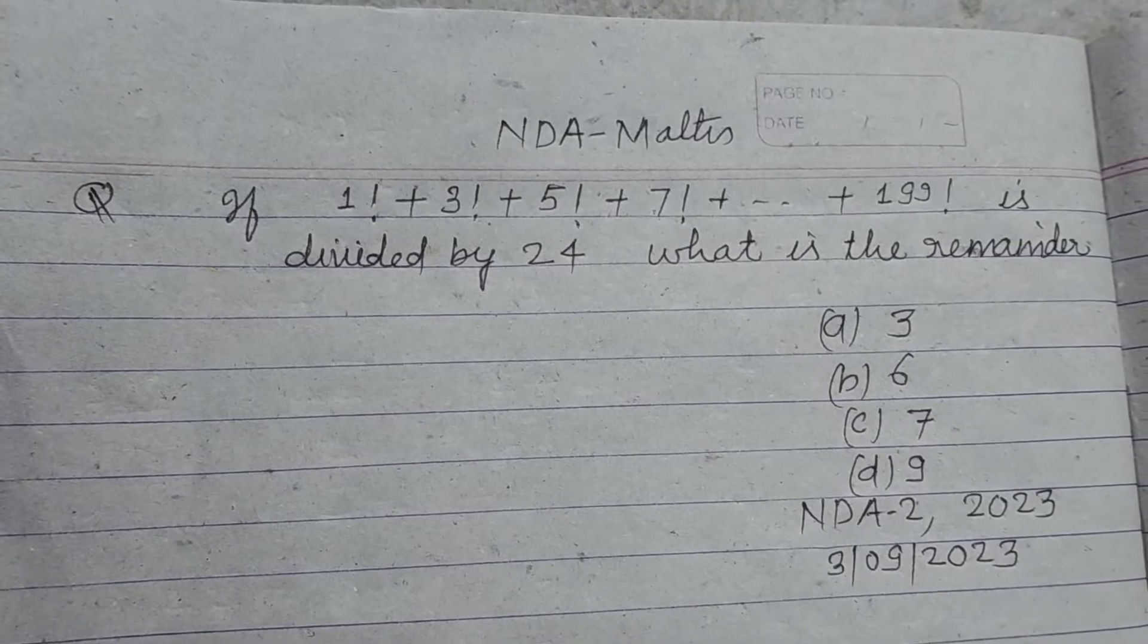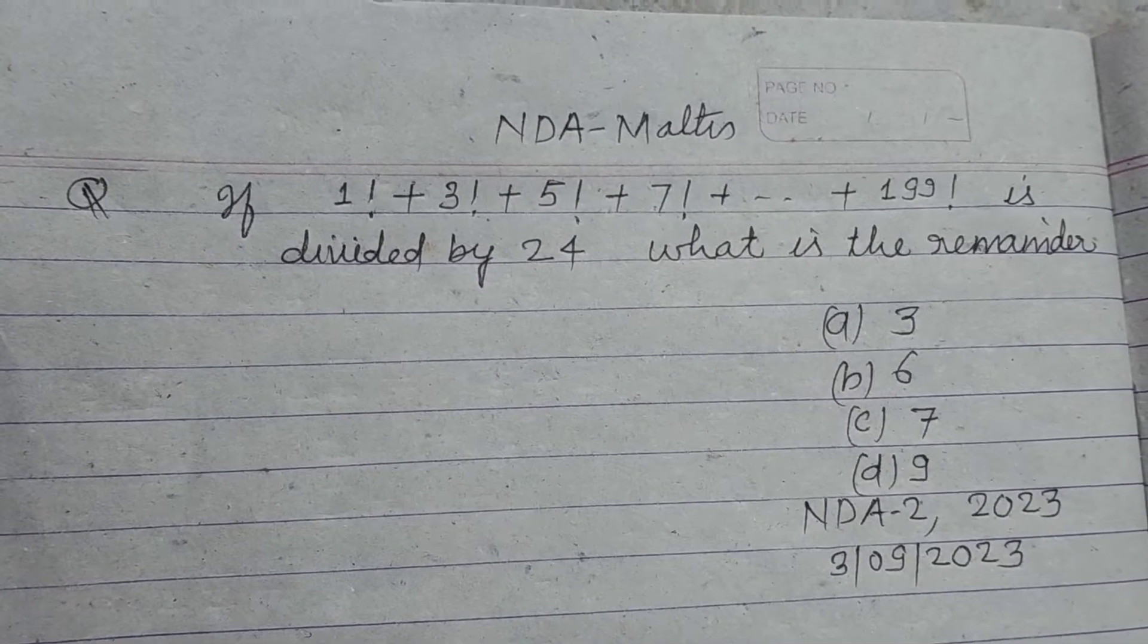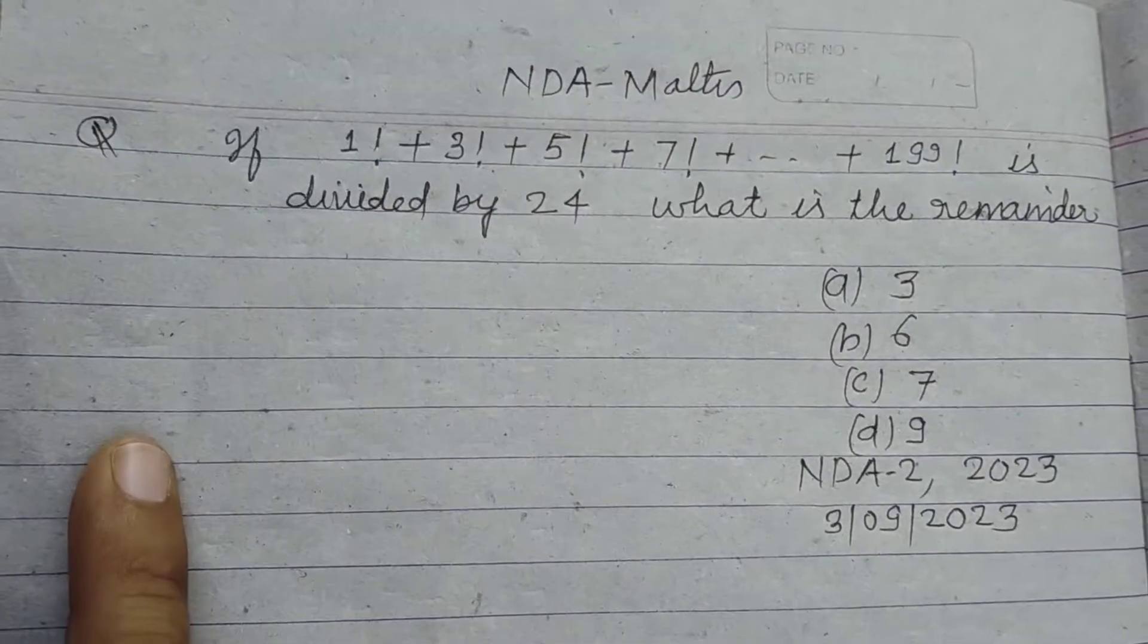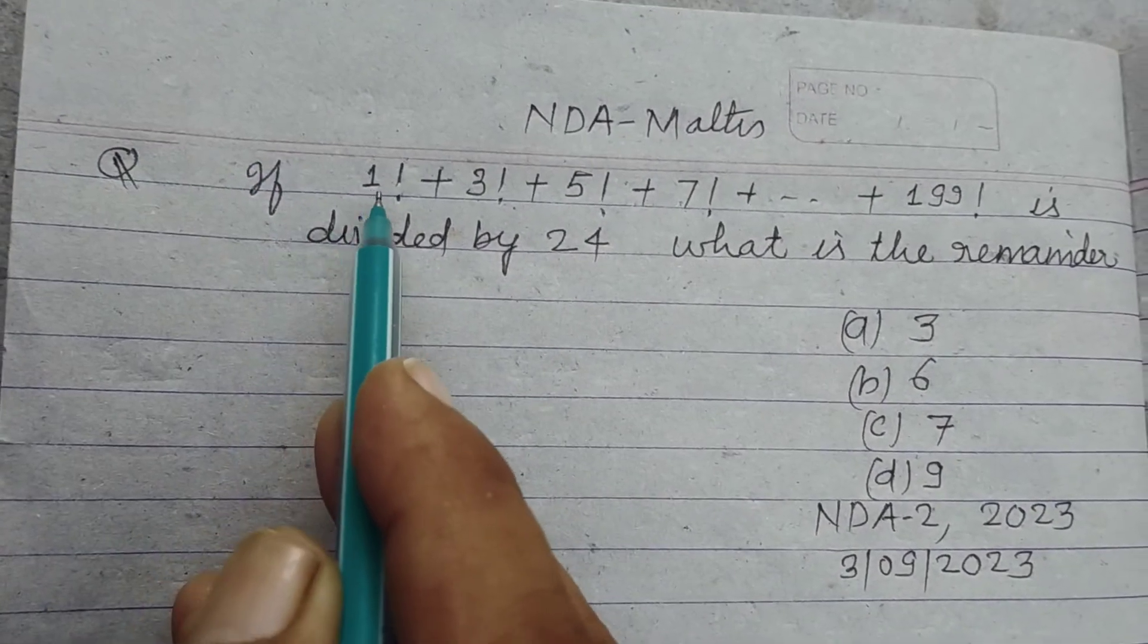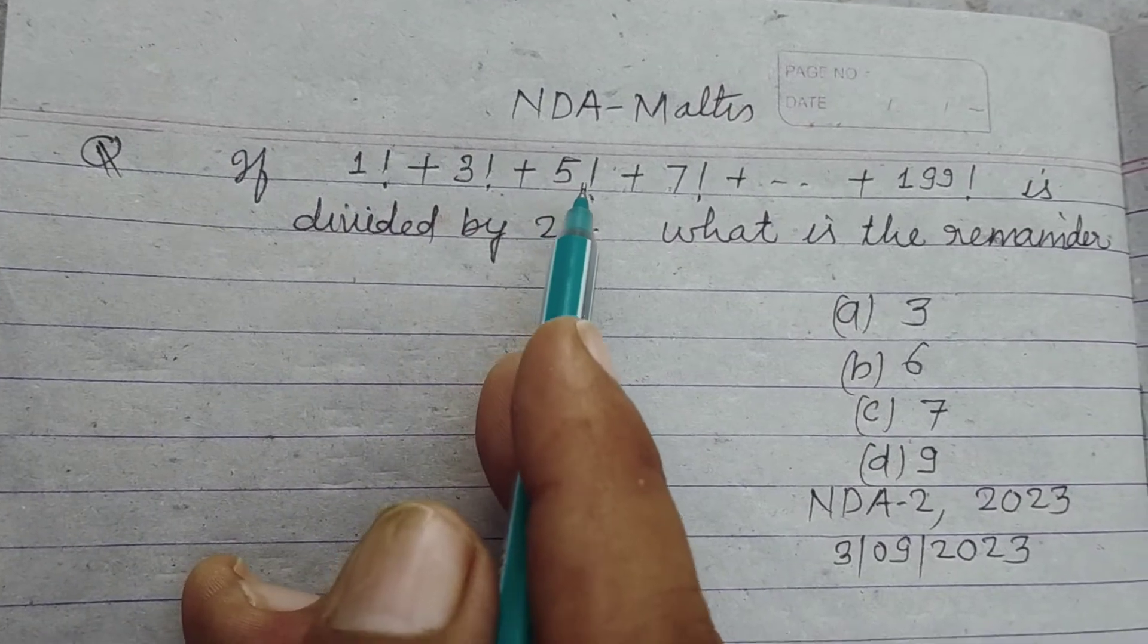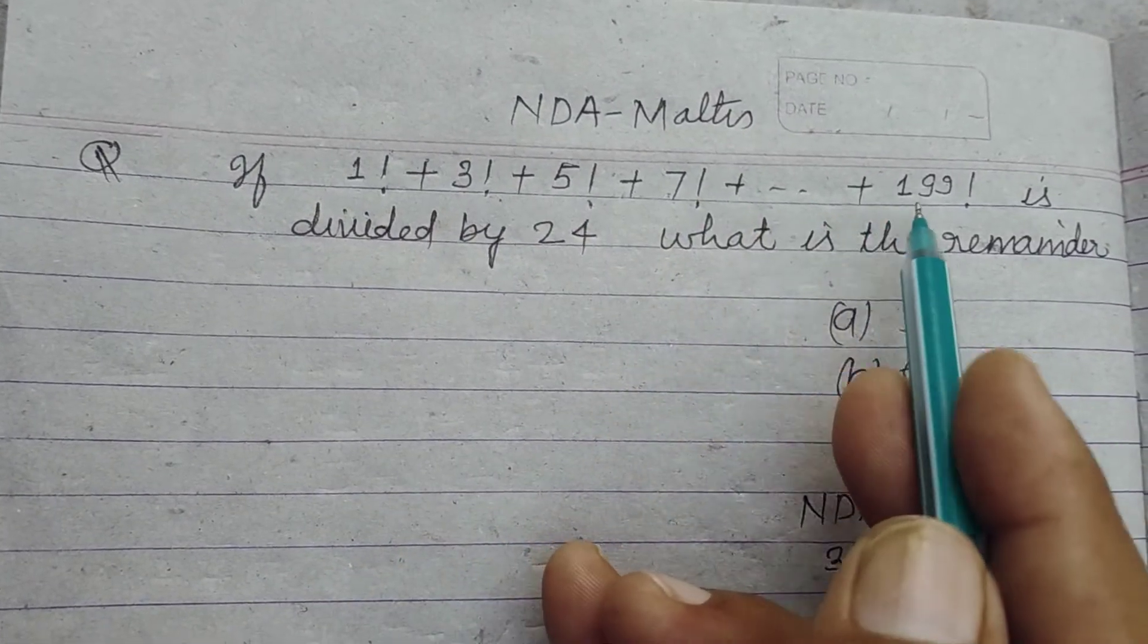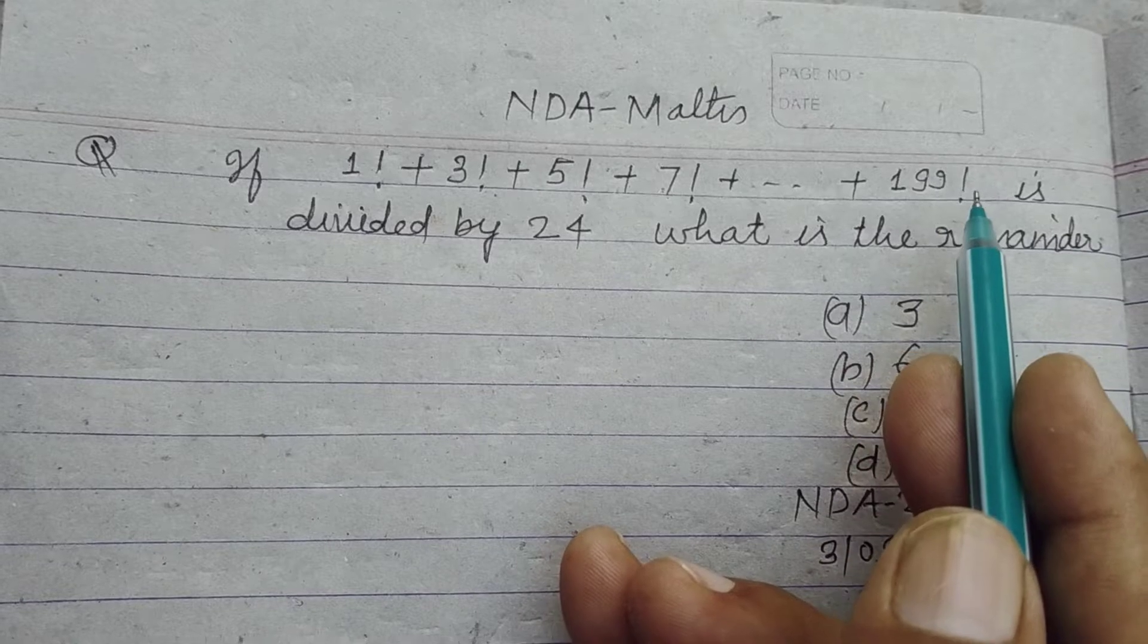Hello students, warm welcome to this YouTube channel. This is a question from NDA second 2023, held on 3 September 2023. The question is saying if factorial 1 plus factorial 3 plus factorial 5 plus factorial 7 and so on plus factorial 199...